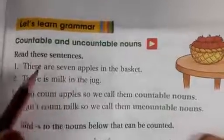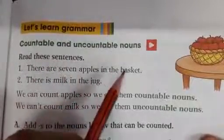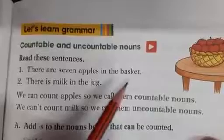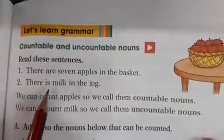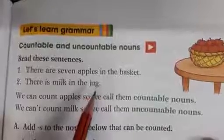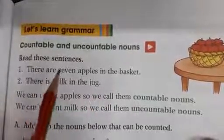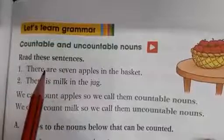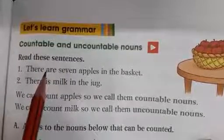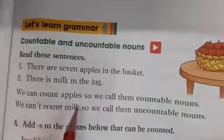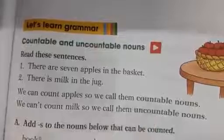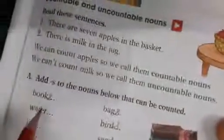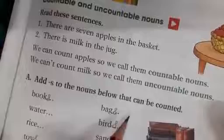Let's learn grammar — countable and uncountable nouns. Read these sentences. There are seven apples in the basket. Can we count the apples? Yes. There is milk in the jug. Can we count the milk? No, we cannot count the milk. There are two types of nouns: countable and uncountable. Countable means things which we can count. Uncountable means things which we cannot count. Apples are countable nouns; milk is an uncountable noun. Add S to the nouns below that can be counted.